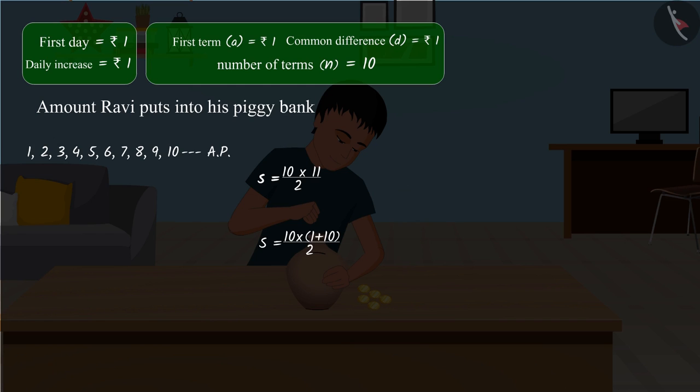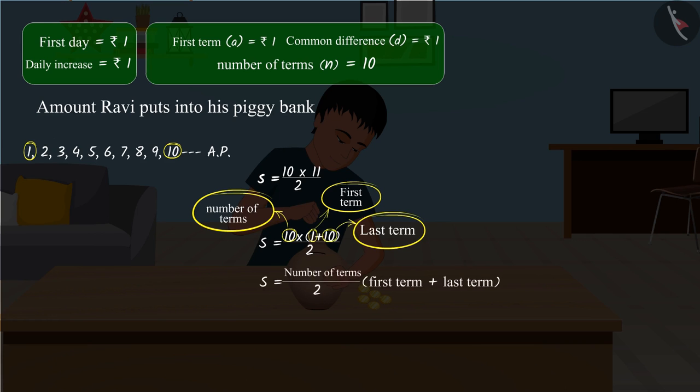We can see that the number 10 shows the number of terms of the arithmetic progression. Number 1 in bracket is the first term of the arithmetic progression and 10 is the last term of the arithmetic progression.